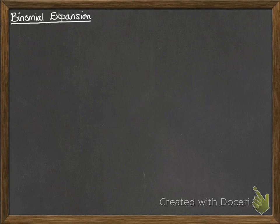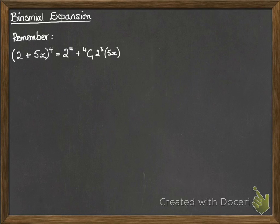You should remember binomial expansion from your AS work from last year, where you did things like this. So you had 2 plus 5x to the power of 4, and you needed to expand that, so the pattern went like this. You've got your first term to the power of 4, then you've got 4 choose 1, 2 cubed, 5x.